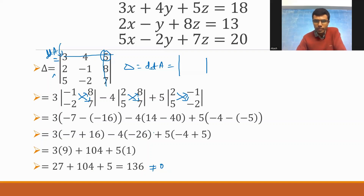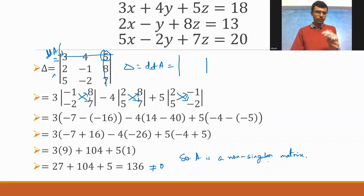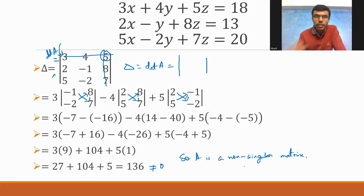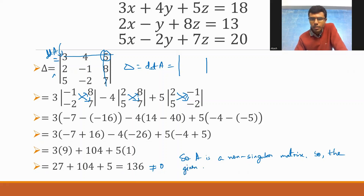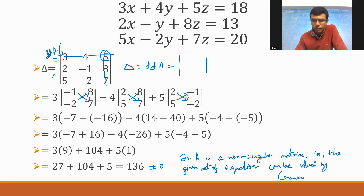Delta equals 136, which is not equal to 0. This means A is a non-singular matrix. Cramer's Rule can only be applied when the determinant is not zero. Since delta is not zero, Cramer's Rule can be applied and the given set of equations can be solved.